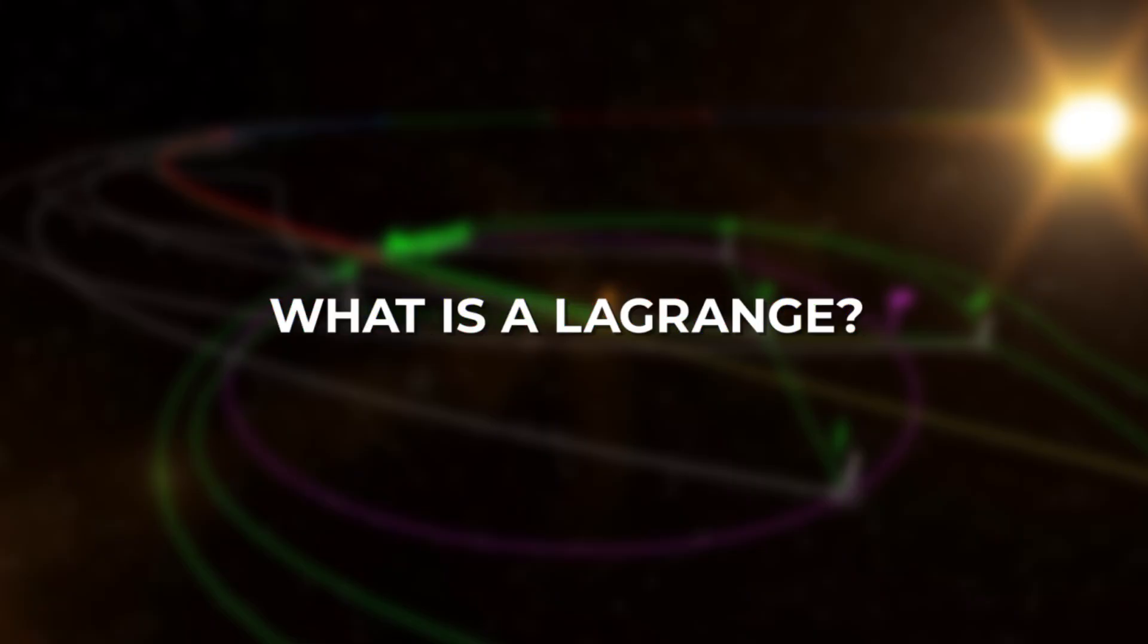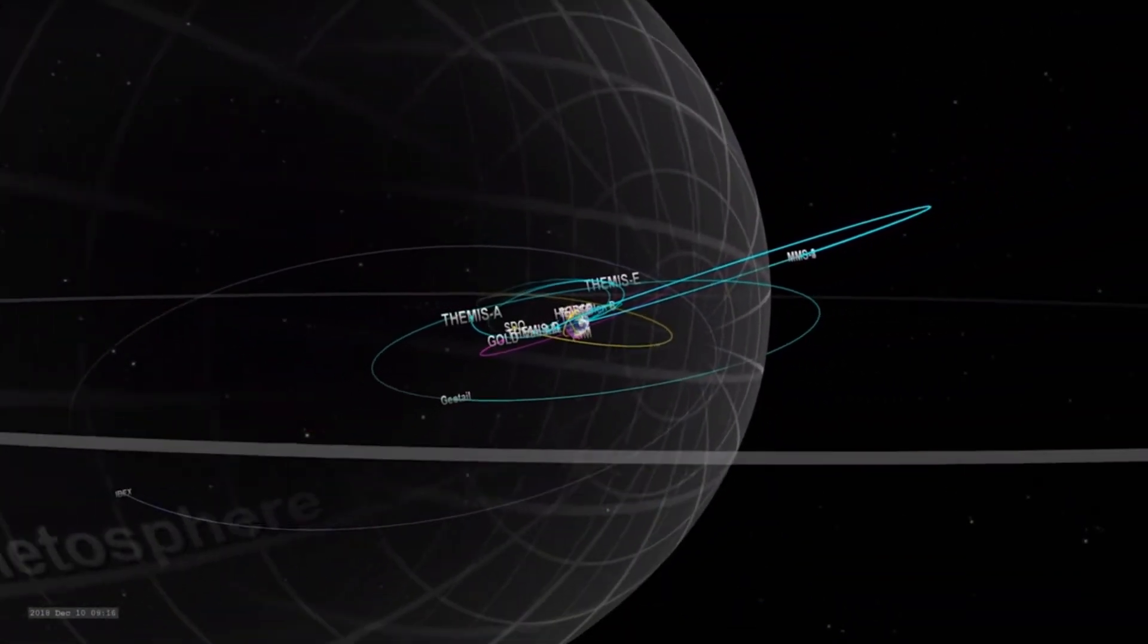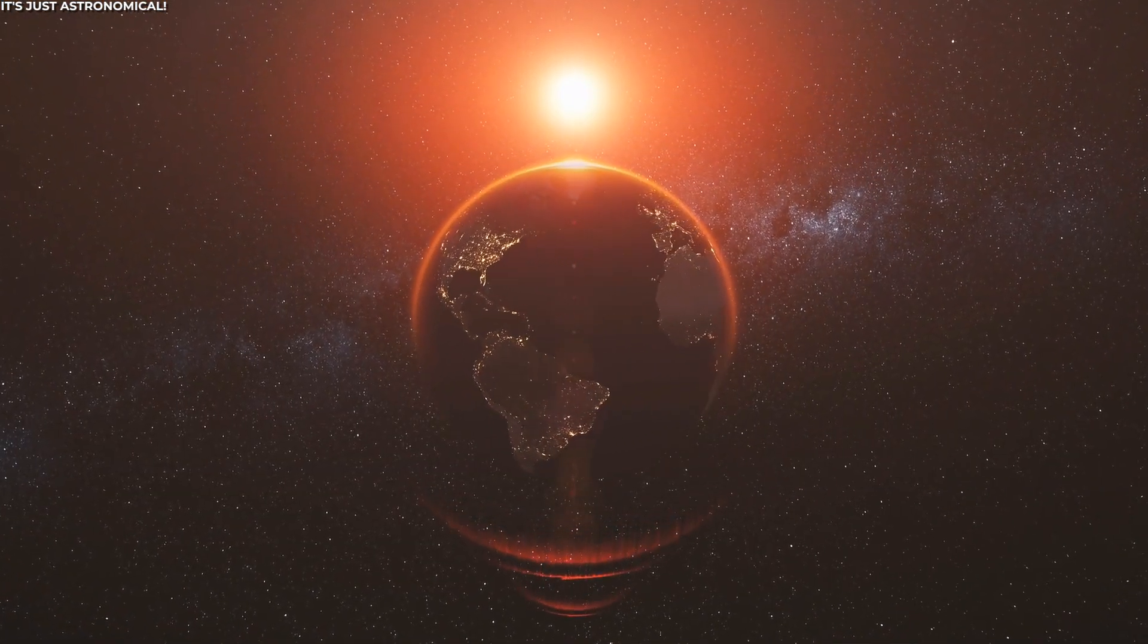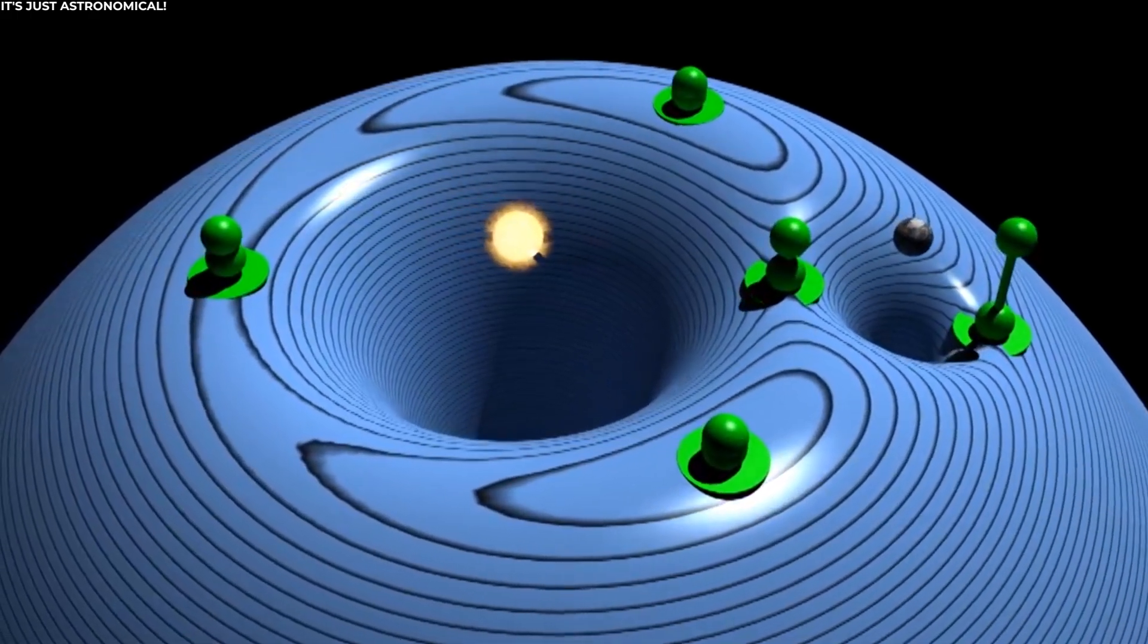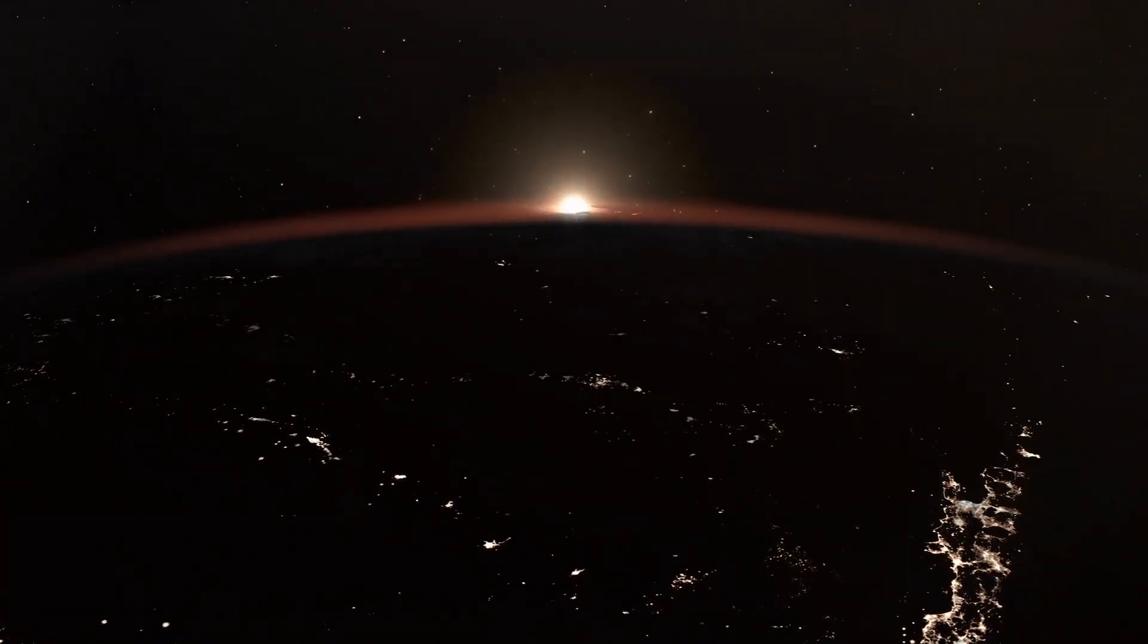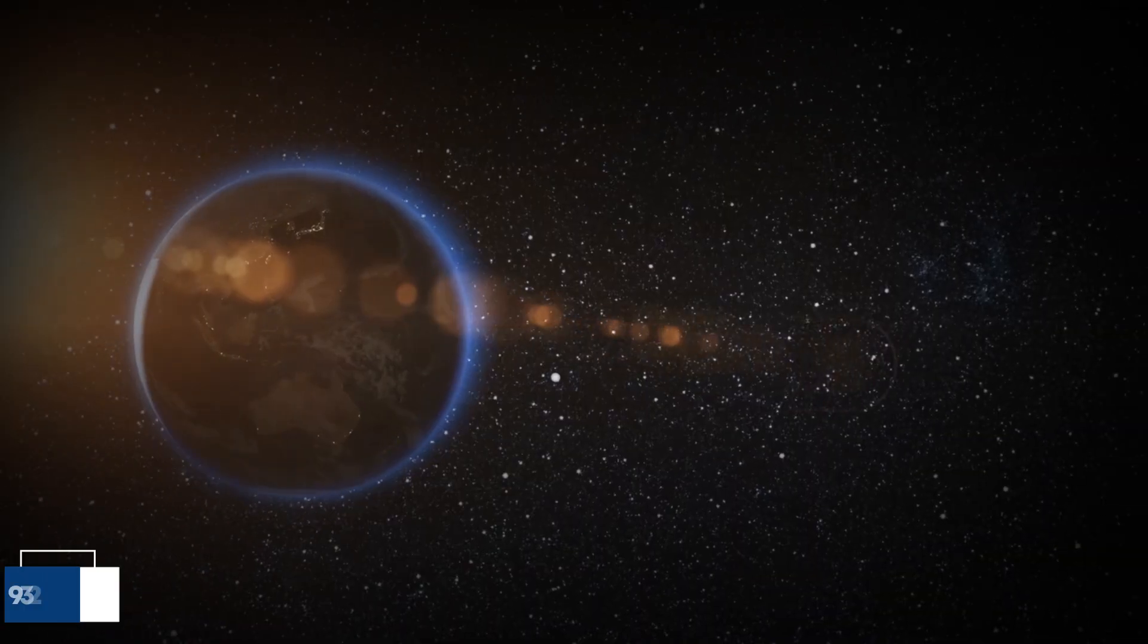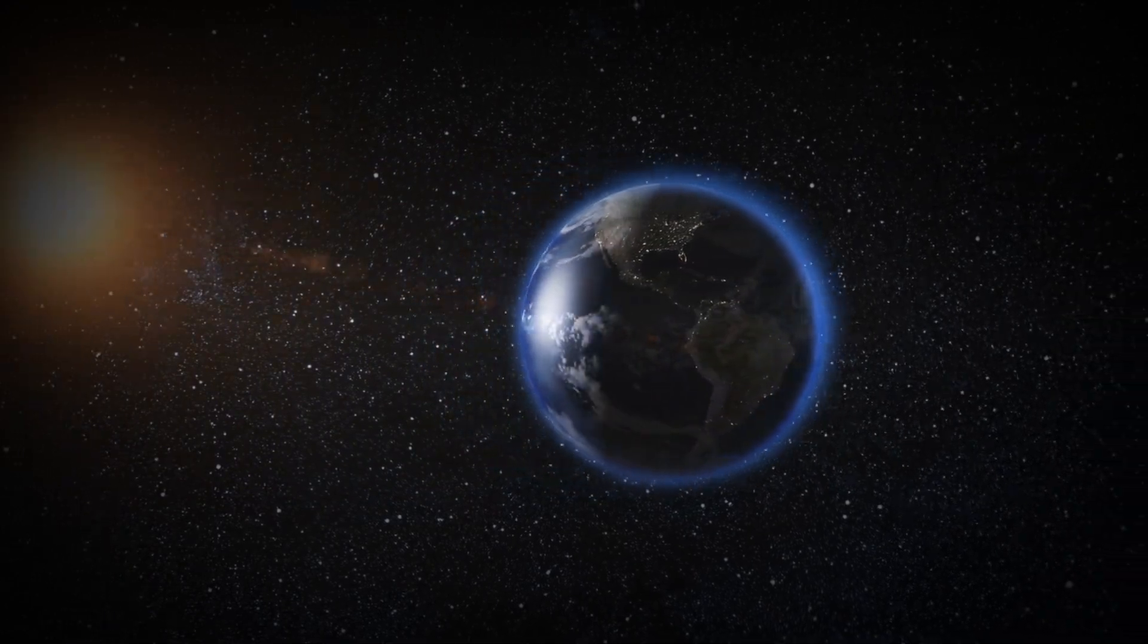But what is a Lagrange? Those empty spaces, called Lagrange points, are positions in space where the gravitational forces of two large objects, in our case the Earth and the Sun, create a stabilization zone where all the objects within remain in a stable position. This exact zone is located at 1.5 million kilometers from Earth, or 932,000 miles.